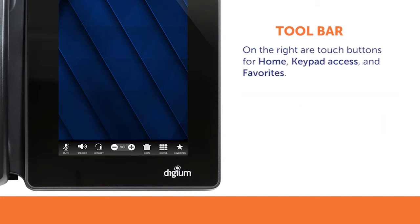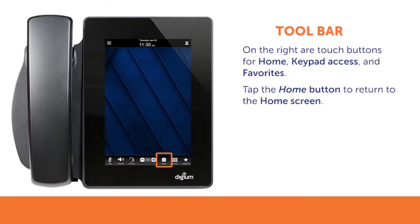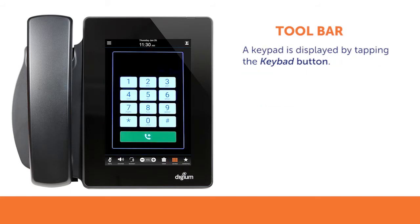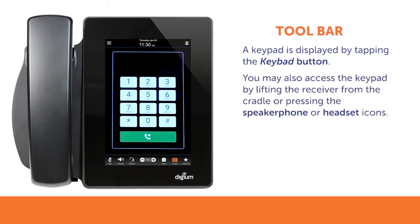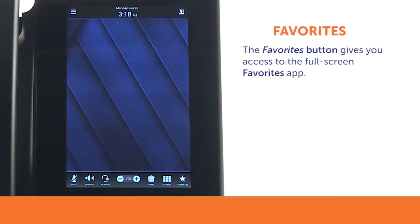The right side of the toolbar provides touch buttons for home, keypad access, and favorites. Tapping the home button returns you to your home screen. Tapping the keypad button displays a standard 10-digit numeric keypad with alphabet lettering. You may also access the keypad by lifting the receiver from the cradle or pressing the speakerphone or headset icons. Pressing the favorites button gives you access to the full screen favorites app.